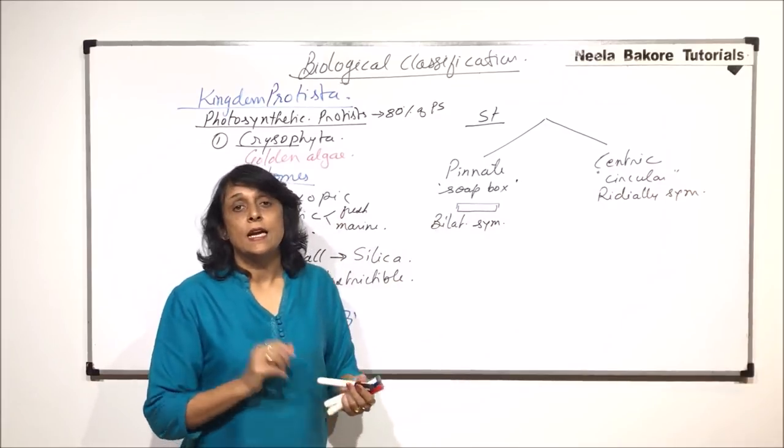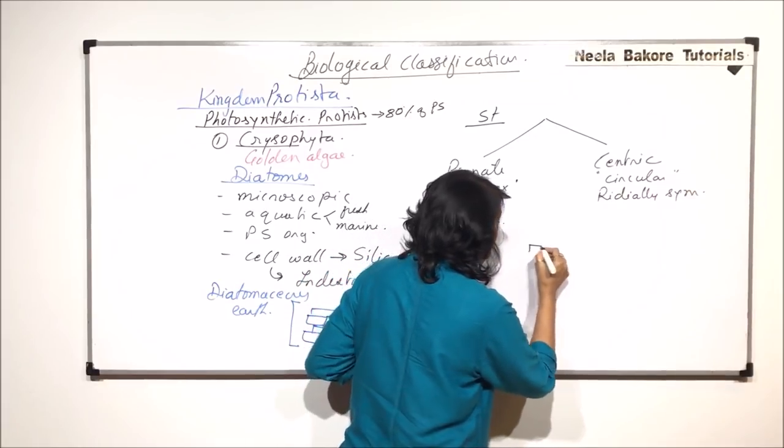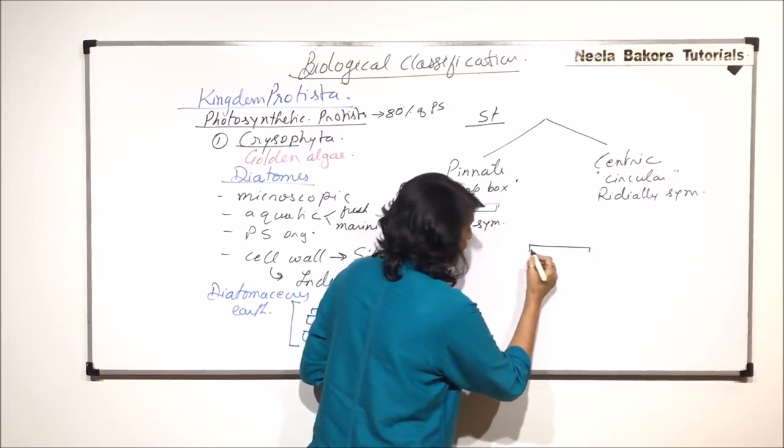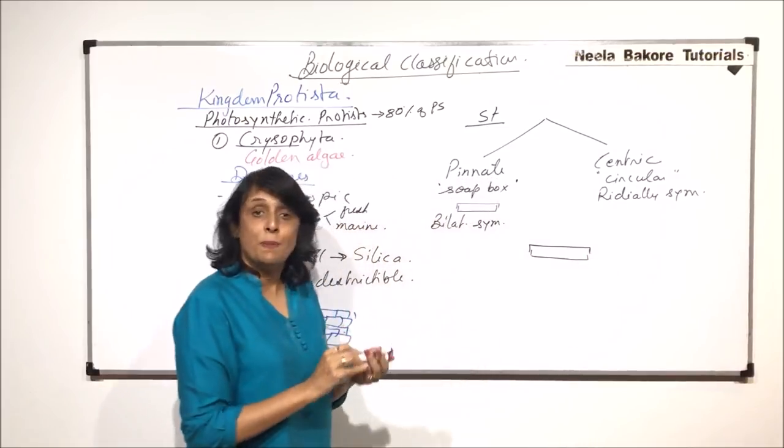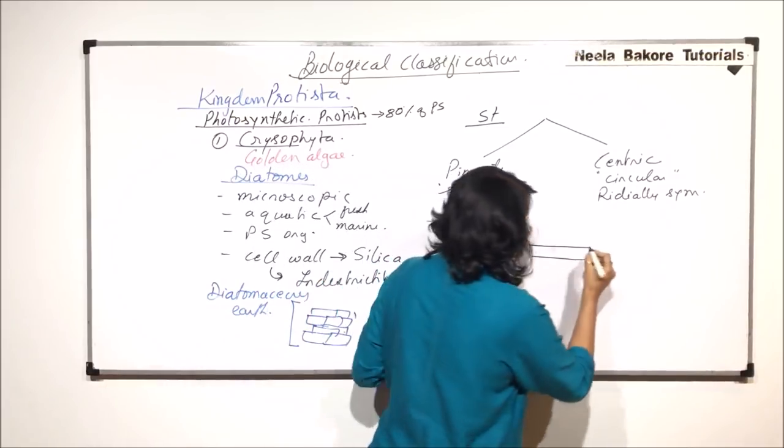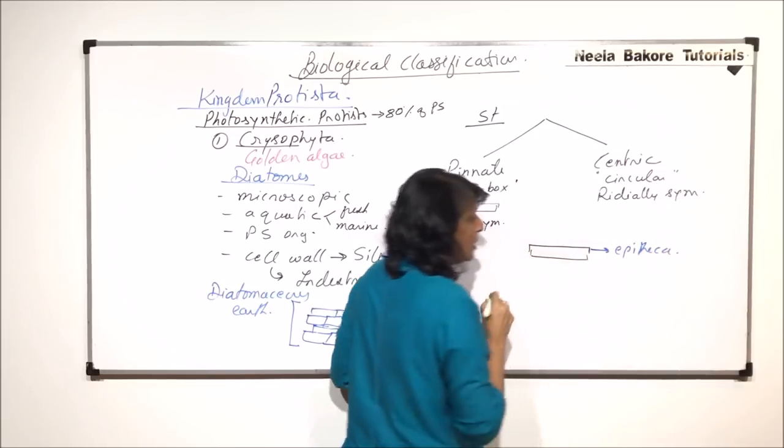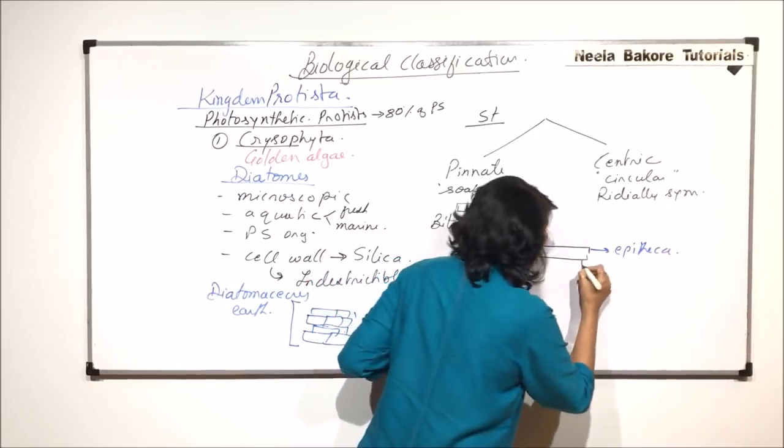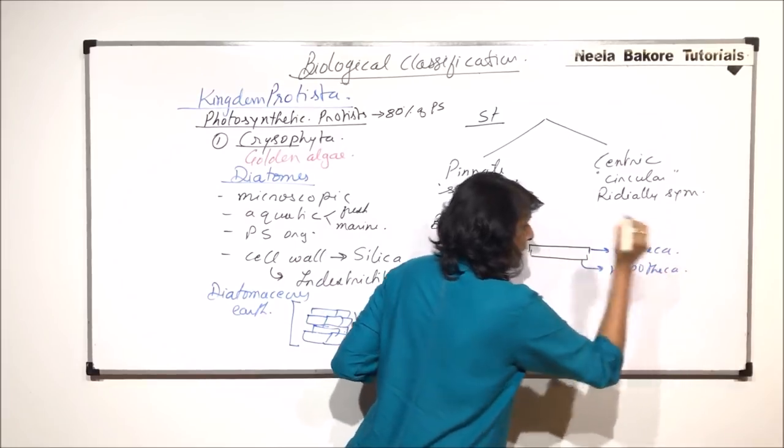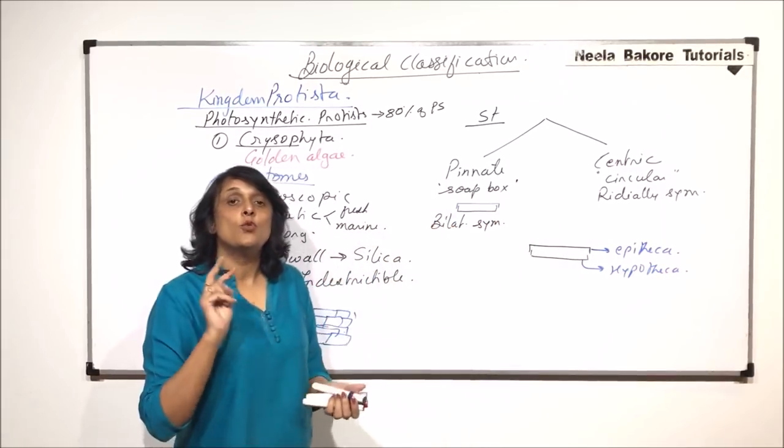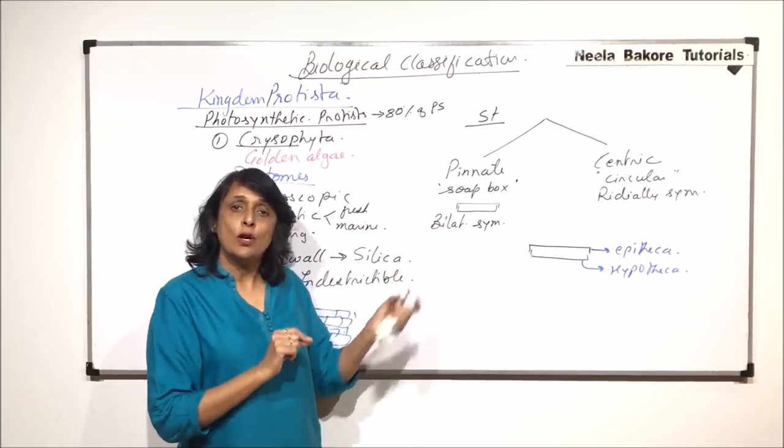The cell wall is divided into two halves. There is an upper half and a lower half. The upper half is bigger and is known as epitheca. The lower half is smaller and is known as hypotheca. Because of these two halves, the name diatom is given. Di is for two.